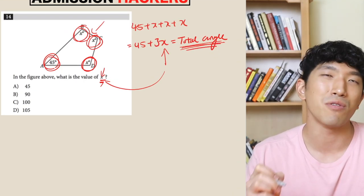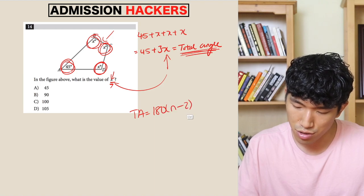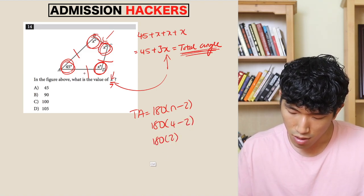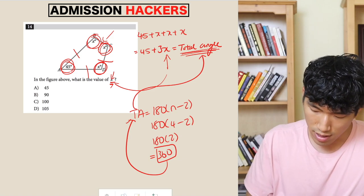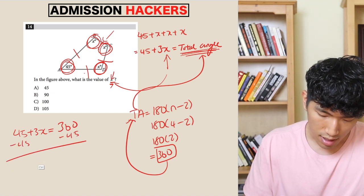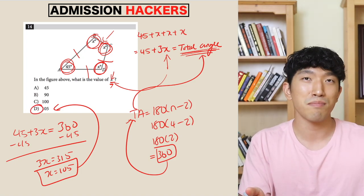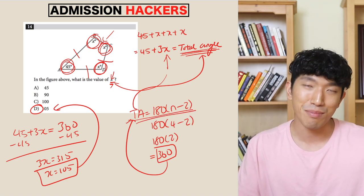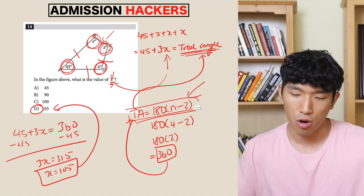How can we find the total angle for this shape? That's when you use the total angle formula: total angle equals 180 times (N minus 2). The shape has 4 sides, so: 180 times (4 minus 2) equals 180 times 2, which equals 360. So the total angle is 360. We plug it in: 45 plus 3X equals 360. Subtract 45: 3X equals 315. X equals 105. The answer is choice D. If they give you six, seven, or eight sides, you are going to need to know how to use the total angle formula.